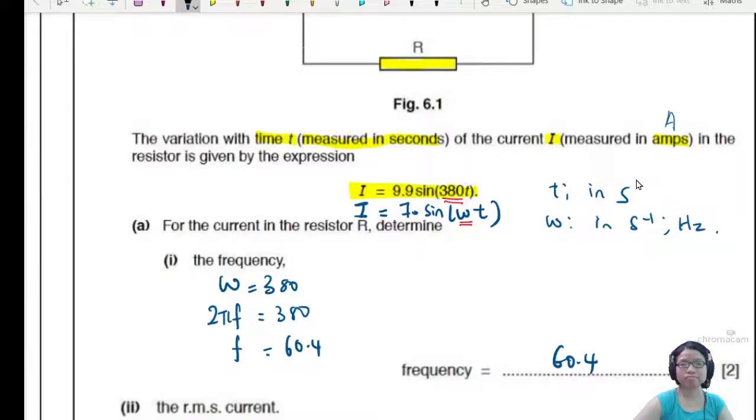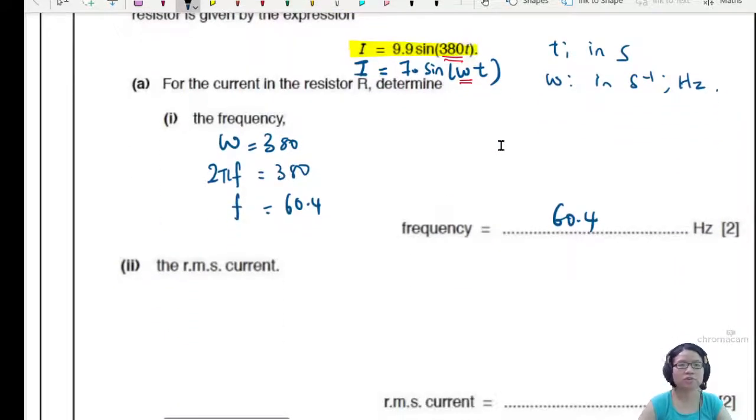Okay. Done. Easy 2 marks. So the first mark is when you identify omega as 380. And the second mark is the final answer. Pretty straightforward.